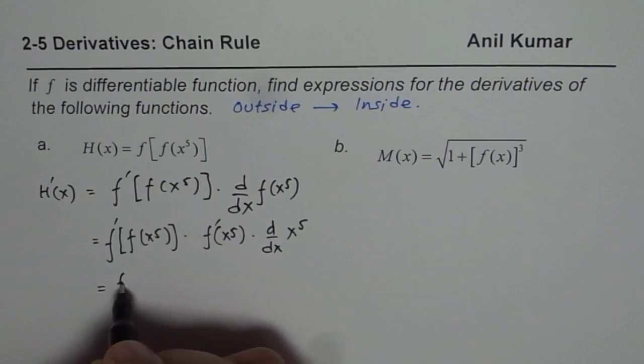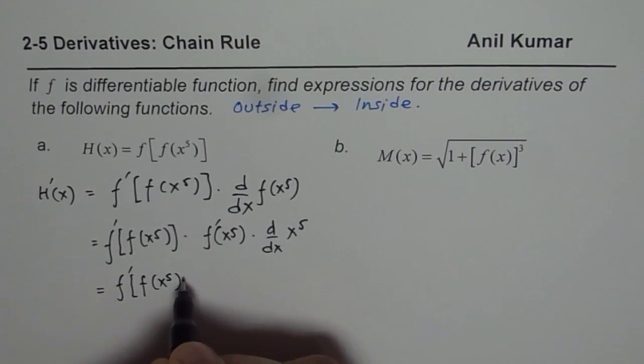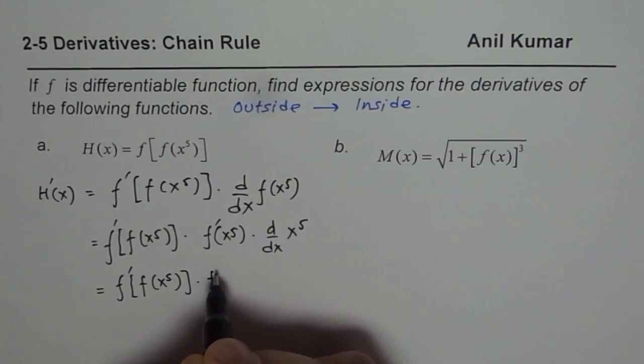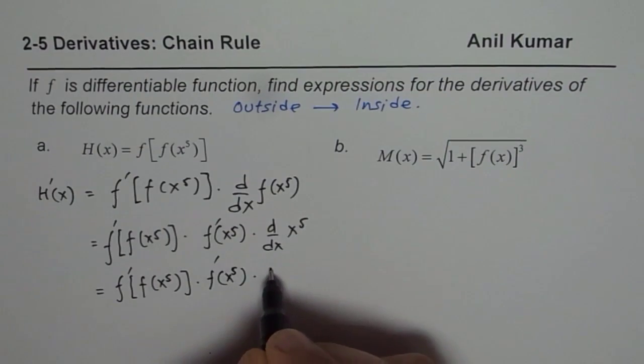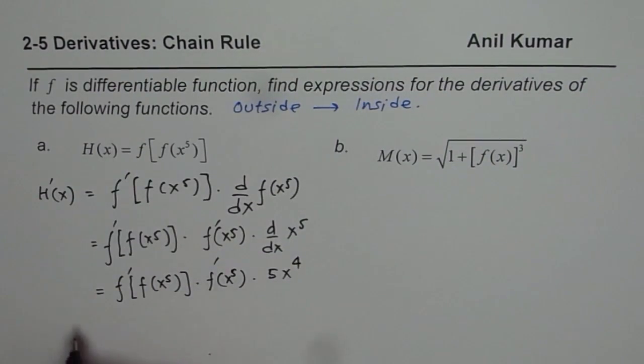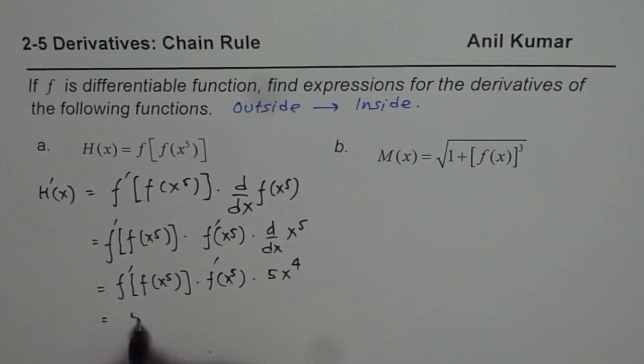We will write this as f'(f(x^5)) times f'(x^5) times 5x^4. Let's rearrange this to write down the answer.